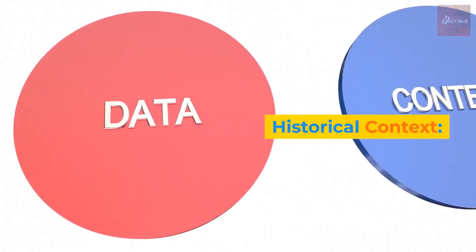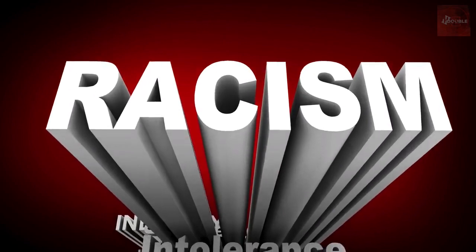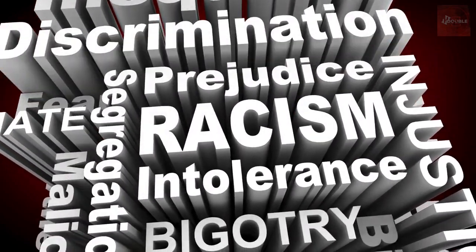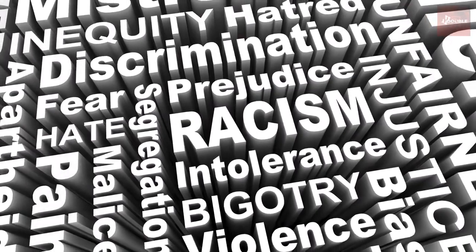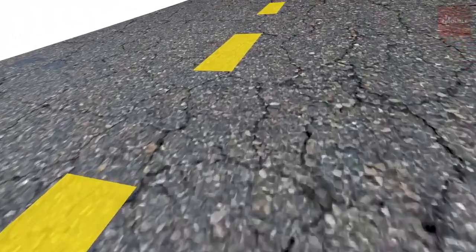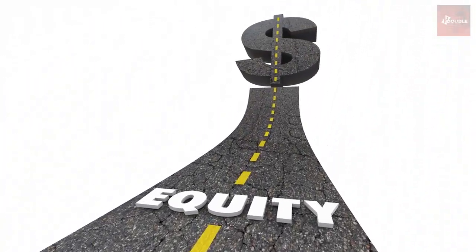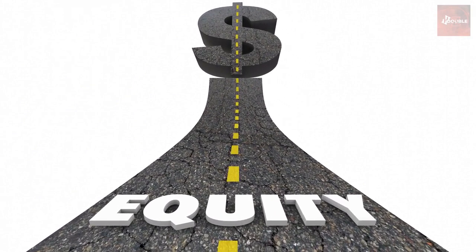Historical context. Discuss the historical factors that have contributed to the wealth gap between black and white individuals. Highlight systemic racism, discriminatory policies, and the legacies of slavery and segregation as key contributors. Present historical data or examples to demonstrate how these factors have had long-lasting effects on wealth accumulation.